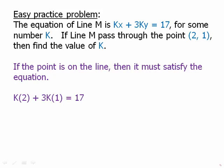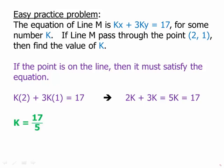So we'll do that. We'll plug in X equals 2, Y equals 1. What we get is 2K plus 3K. 2K plus 3K is 5K. 5K equals 17. And so K must equal 17 fifths. So that's the value of K.